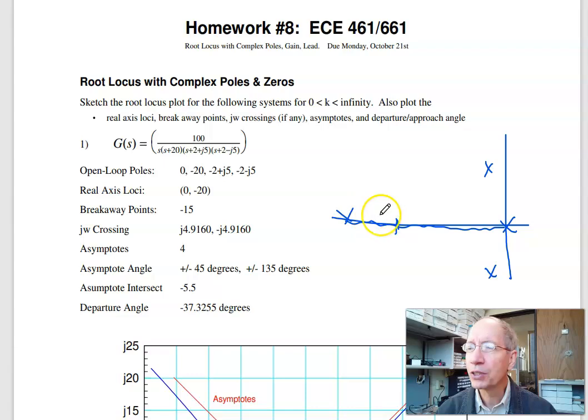For j-omega crossings, I need to do a search. Search along the j-omega axis until the angles add up to 180. Turns out it's actually right here, a little bit below, j4.91.